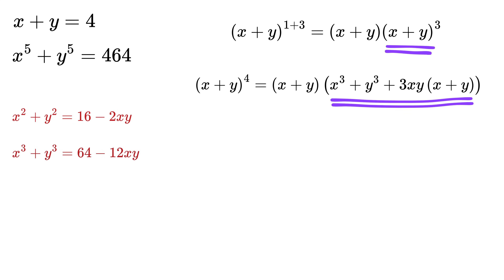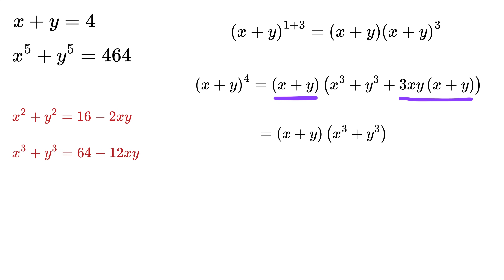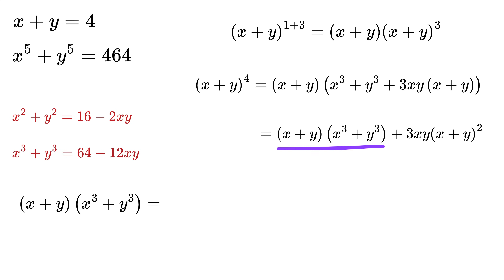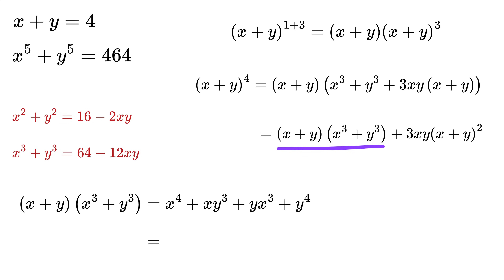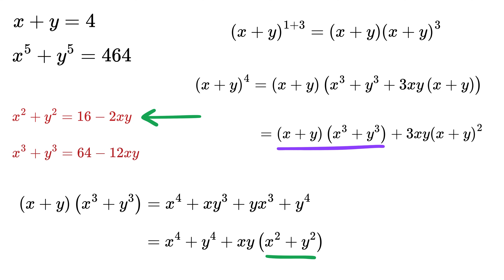Substituting (x+y)³ and expanding by multiplying with (x+y), we get: x times x³ is x⁴, x times y³, y times x³, and y times y³ gives y⁴. So we have x⁴ plus y⁴ plus xy(x²+y²). Substituting x²+y² as 16 minus 2xy, this becomes x⁴ plus y⁴ plus xy(16 minus 2xy), which is x⁴ plus y⁴ plus 16xy minus 2(xy)².